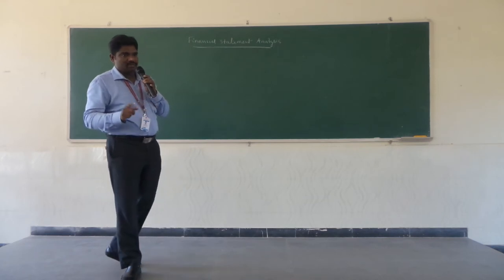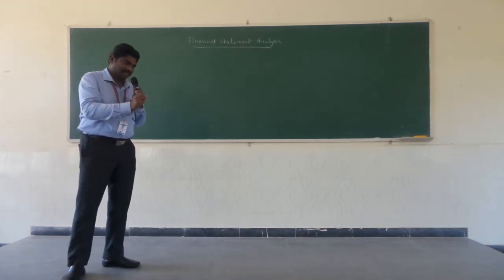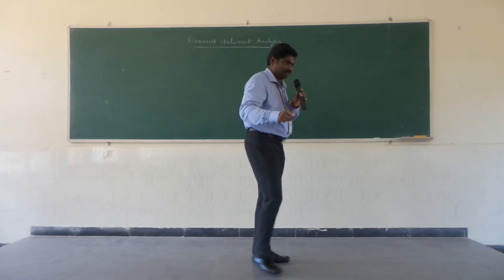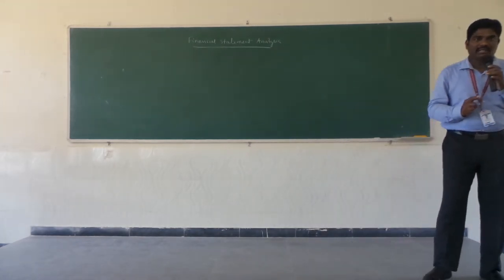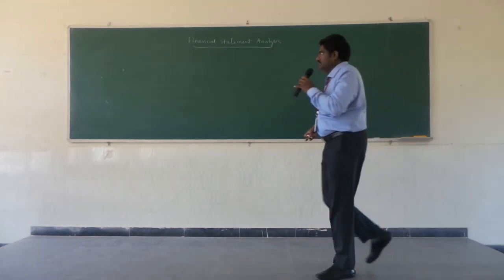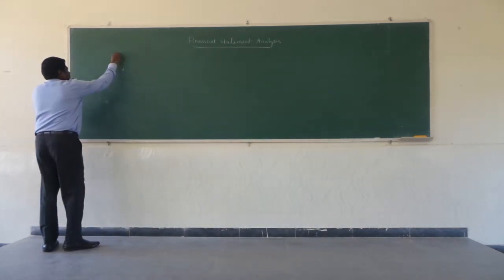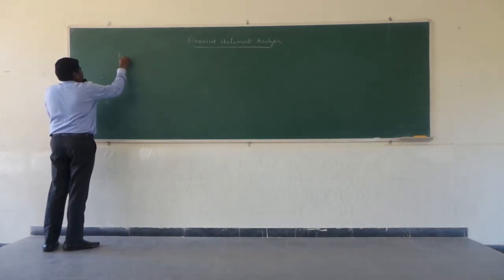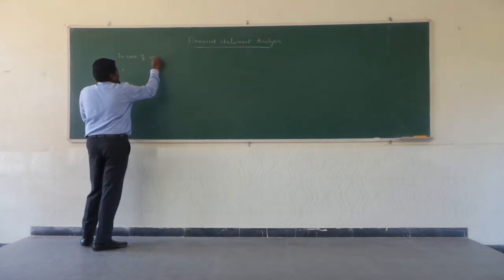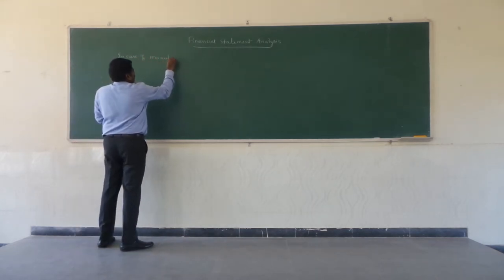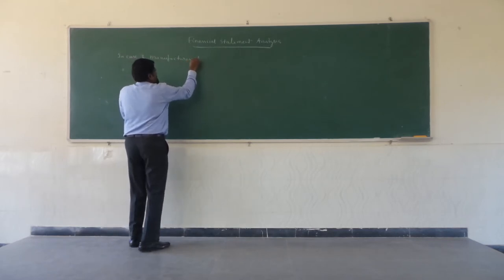Whatever data is recorded by the accountant in the journal is going to be transferred to the ledger. From the ledger, they will prepare a trial balance, and from this trial balance, they are going to prepare the financial statements — in case of a manufacturing company, these are the four stages generally they will prepare.